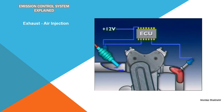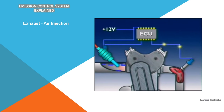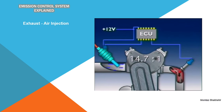A voltage signal is relayed back to the control unit to indicate whether the mixture is rich or lean — more oxygen indicates a lean mixture, less indicates a rich mixture. The control unit then adjusts the amount of fuel being injected into the engine to keep the air-fuel ratio very close to the chemically correct composition for complete combustion. By mass, this is 14.7 parts of air to one of fuel, known as the stoichiometric ratio.